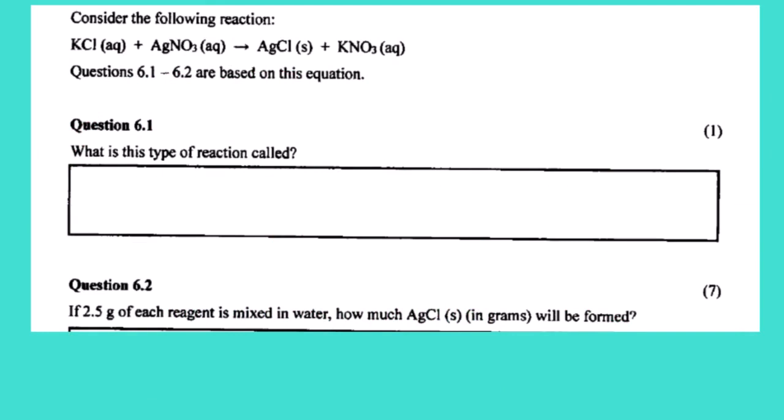Potassium chloride plus silver nitrate gives us silver chloride plus potassium nitrate. Mixing the two aqueous solutions we obtain a precipitate which is silver chloride in solid form, plus potassium nitrate in aqueous solution.